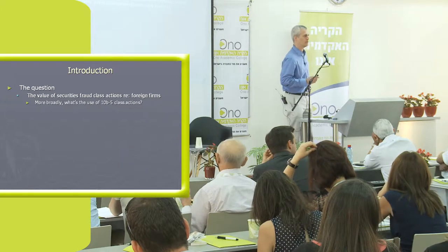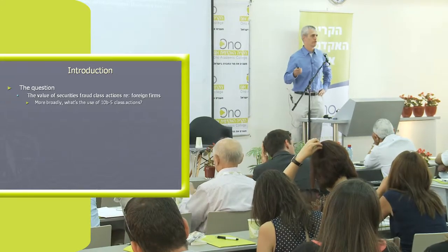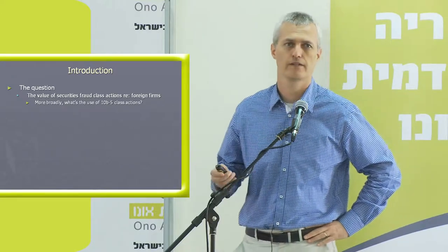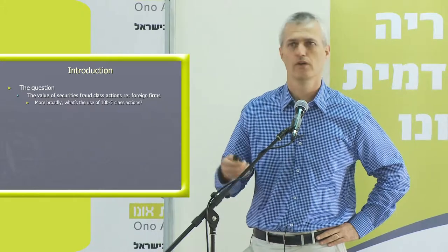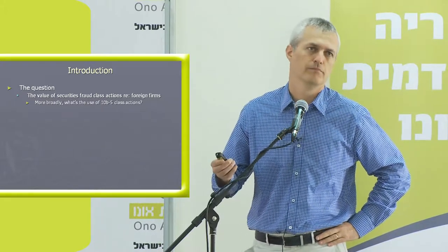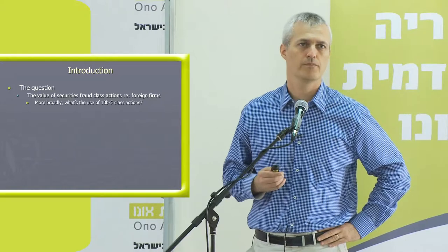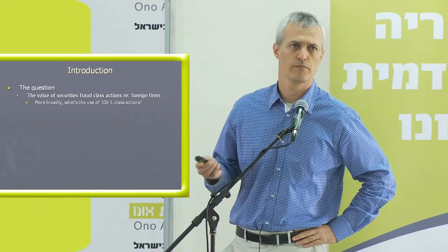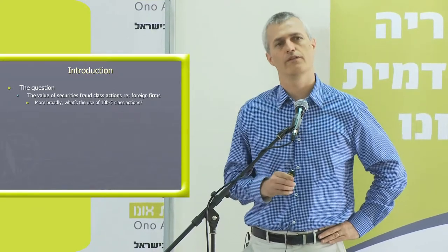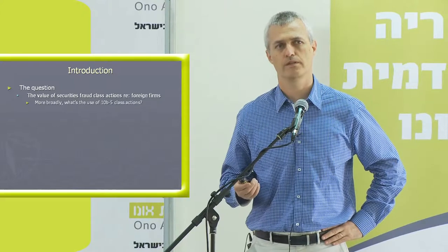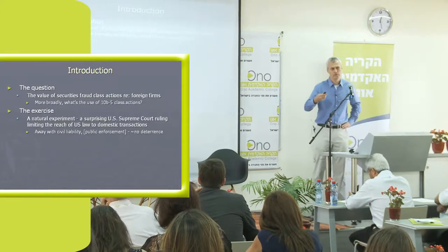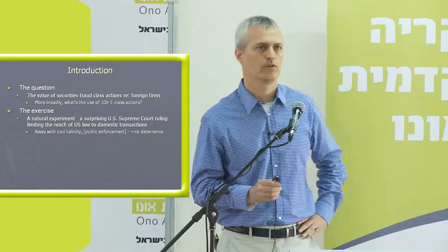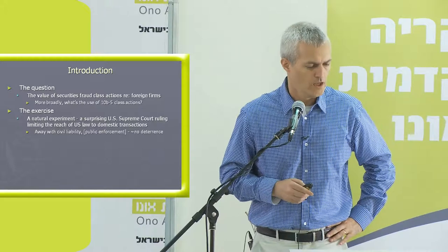The basic setting is one in which you have investors in a public company. The law provides that if they are defrauded they can sue, hopefully in a class action, and get compensated for any damage they suffered. Now suppose the law takes away the investors' right to sue and get compensated. What would happen? We test such an event — we examine such an event in the US.